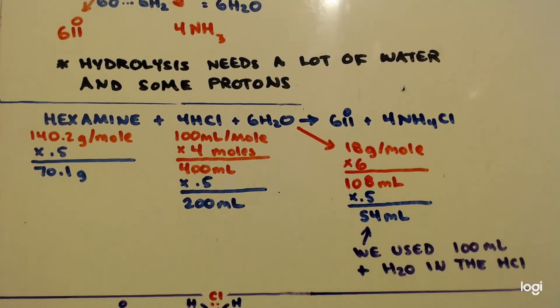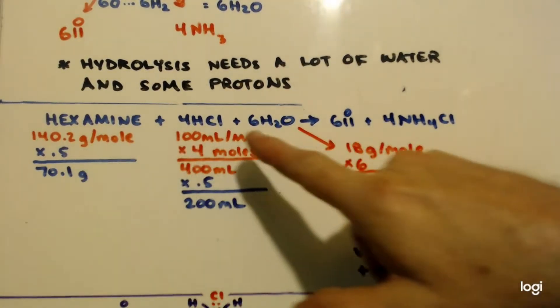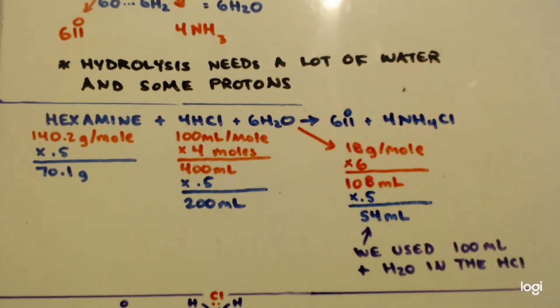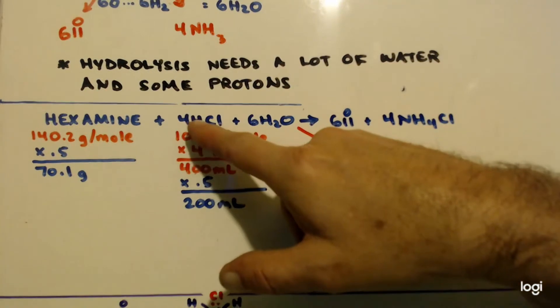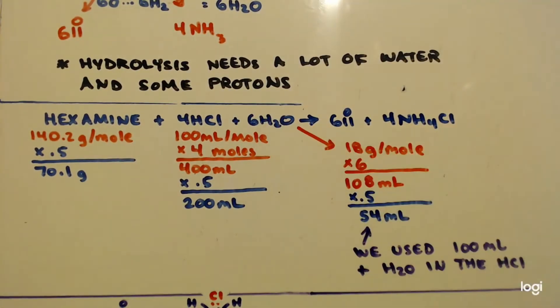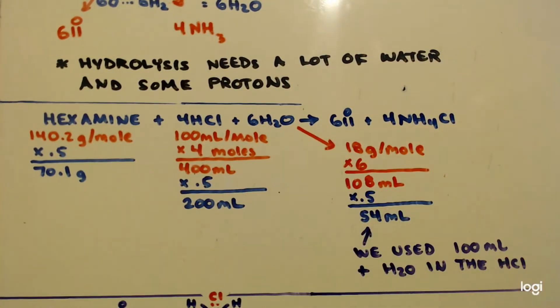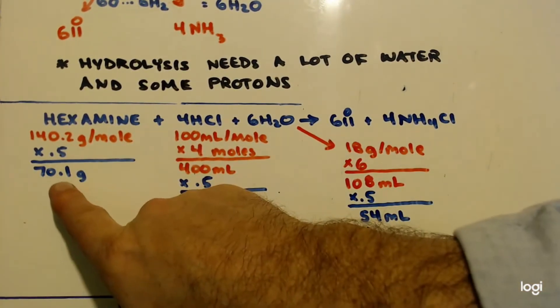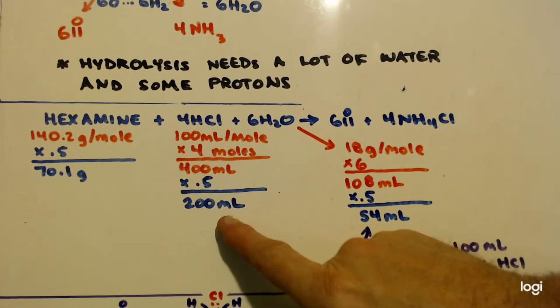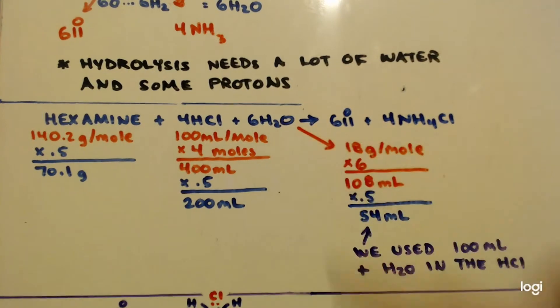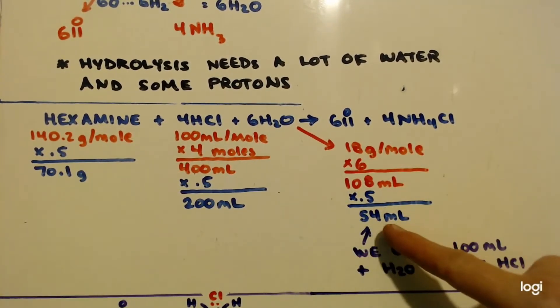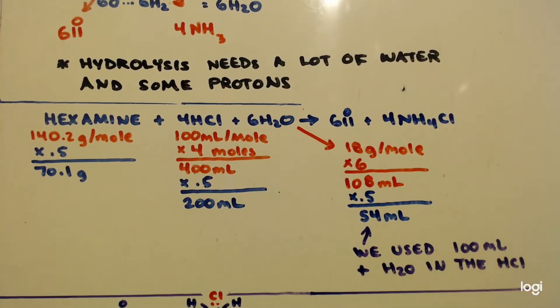So here's the equation to hydrolyze hexamine. Here's the molar masses. You can see I multiplied this by four because there's four moles. I multiplied this by six because there's six moles. And then I took all of them, every last one of them, times 0.5. So this is how much hexamine I used. This is how much hydrochloric acid I'm going to add. And the water, I used a lot of extra water. I only needed 54 milliliters. Remember we used 100 milliliters just to dissolve the hexamine. Plus there's almost 72% water in HCl. So we definitely got the water covered.